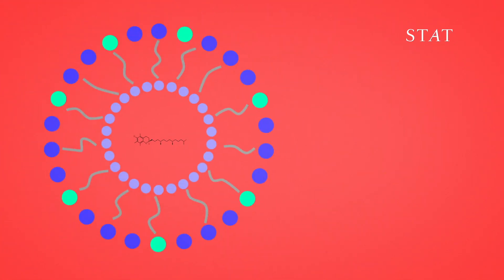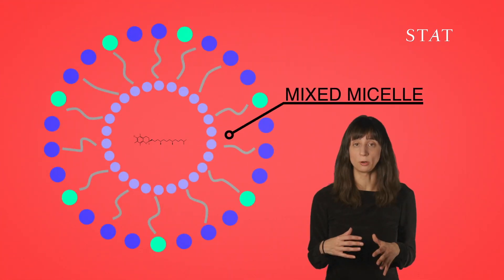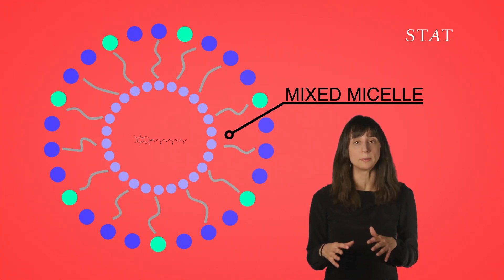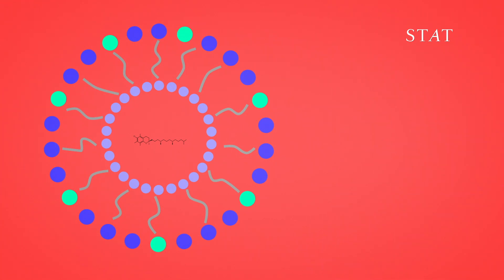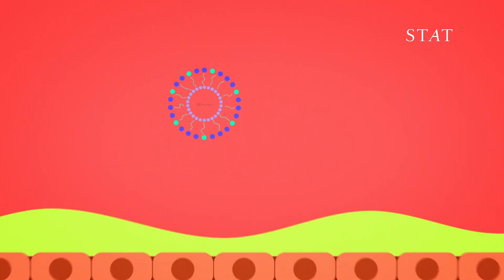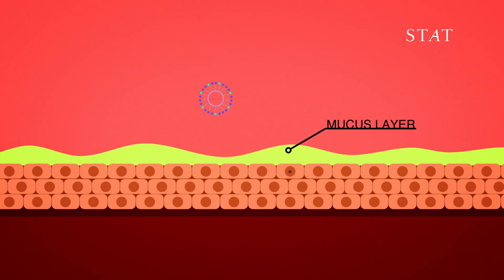The vitamin then gets trapped in these tiny particles called mixed micelles. These are natural nanoparticles that are made by bile acids that get secreted by your body. Those particles take the vitamin, ferry it through the stomach's mucus layer and into epithelial cells.